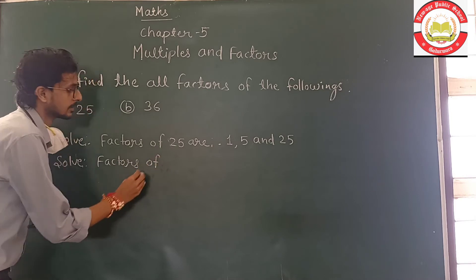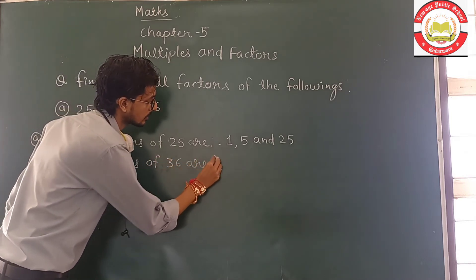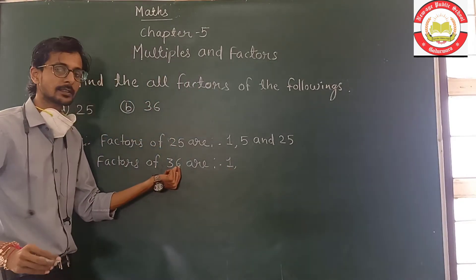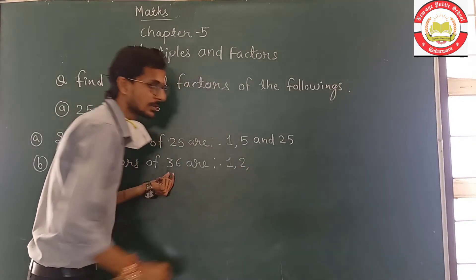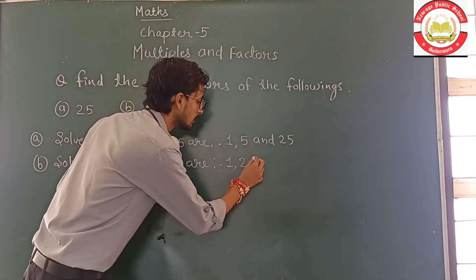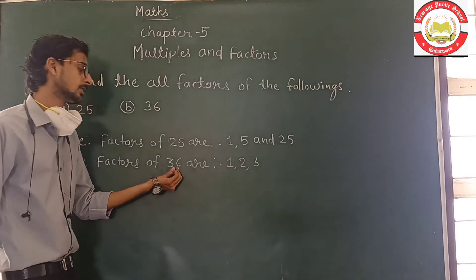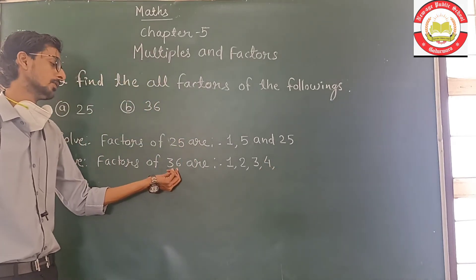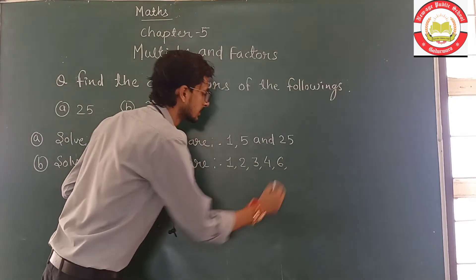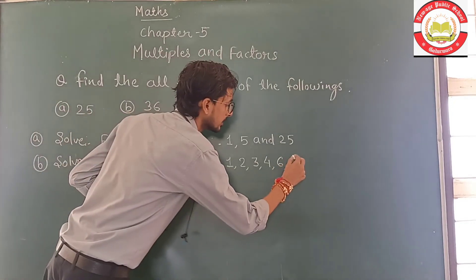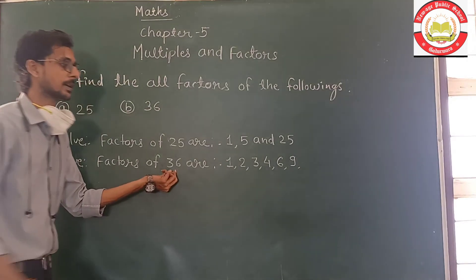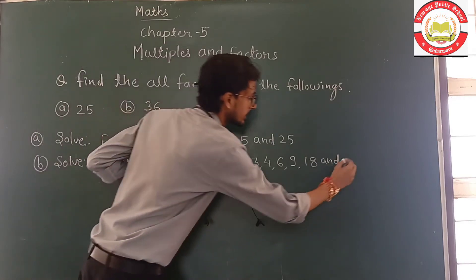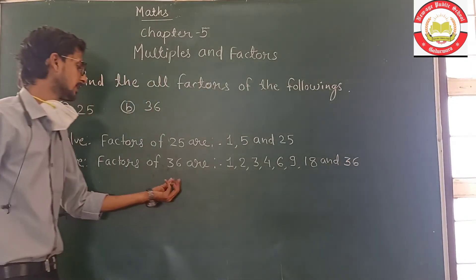Factors of 36 are: now similarly we have to check the factors of 36. So 1 times 36, 2 times 18, 3 times 12, 4 times 9, 6 times 6, then 9 times 4, 18 times 2, and last one is 36 itself. So these are all the factors of 36.